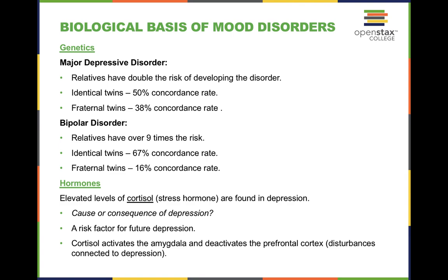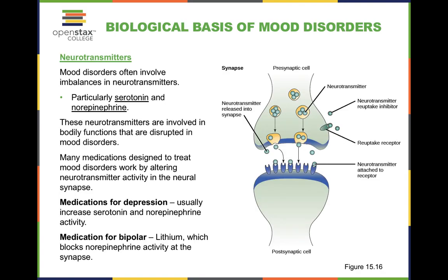The concordance rate is significantly different between identical and fraternal twins for bipolar disorder — 67% for identical twins versus only 16% for fraternal twins. Not every case of depression results from an imbalance in neurotransmitters, but it does occur. When individuals have depression, they're commonly prescribed an antidepressant — usually an SSRI, or selective serotonin reuptake inhibitor — which inhibits the reuptake or reabsorption of serotonin, leaving more available in the synaptic cleft to continue binding to receptors and firing action potentials.